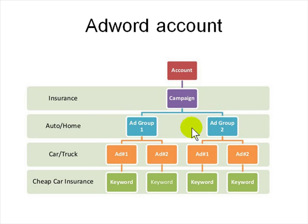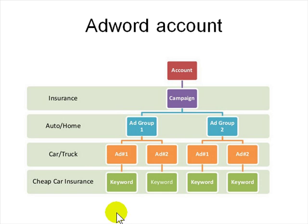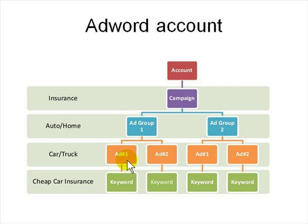Ad groups organize your campaign — for example, ad group one, two, three. Within each group there will be multiple ads saying things like 'buy truck,' 'buy car,' 'buy Toyota,' 'buy Nissan.' The question is which ad to show to which person. You give Google a list of keywords — for example, 'buy car' should trigger ad one, and 'cheap car insurance' should trigger ad two. Keywords are basically what users type in, and you match them to ads. Facebook is smarter — it doesn't ask for keywords; it just figures out who you are, what you're searching for, and what you want, then shows ads automatically.